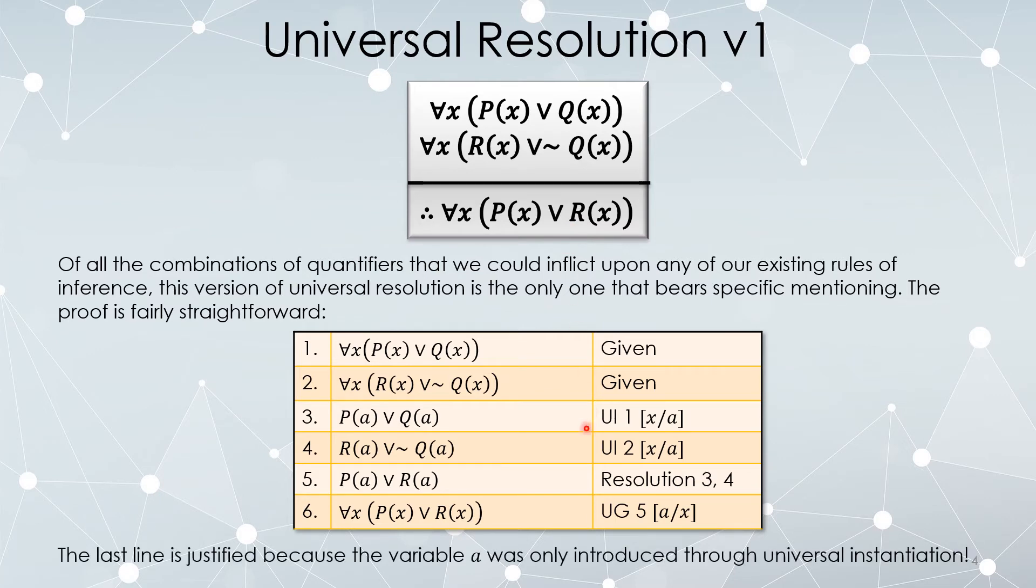Okay, again, universal generalization requires you to be careful. The free variable A only appeared through these two lines of universal instantiation. It never appeared in a given as a free variable, and it never appeared through existential instantiation. So it can be replaced through universal generalization.